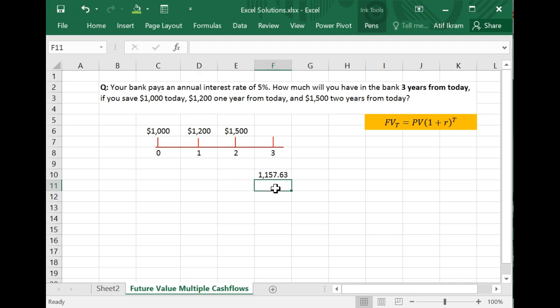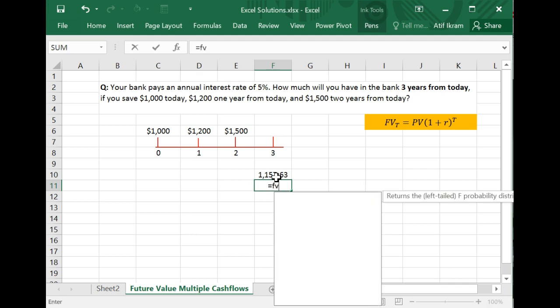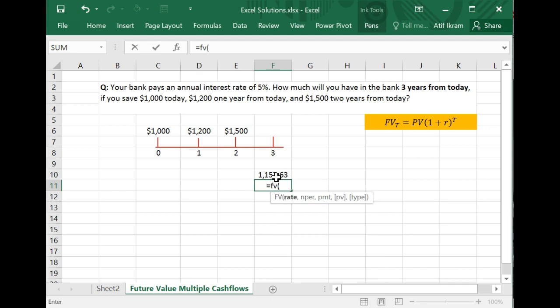So here you're going to say, look, I also want to figure out the future value at an interest rate of 5% again. That's the same. But now I want to find out how much this $1,200 will be two years out into the future. So the number of time periods you're going to enter is two.